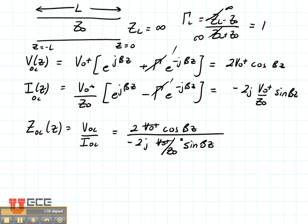Our Z0, our V0+ pluses cancel out, our 2s cancel out, and our minus j is going to come up to the top as a positive j. That's going to give us j, and here we have cosine over sine, that's cotangent of βz.